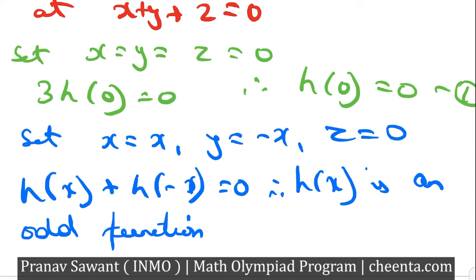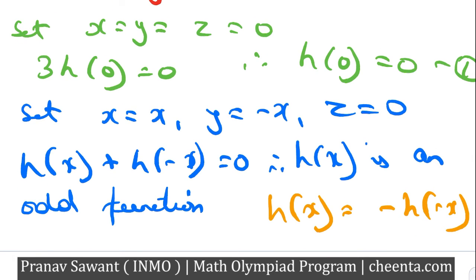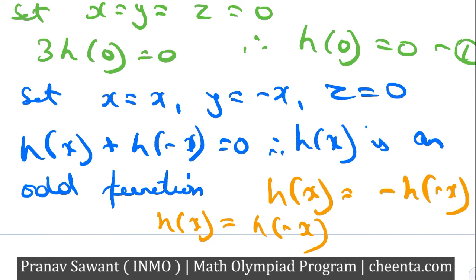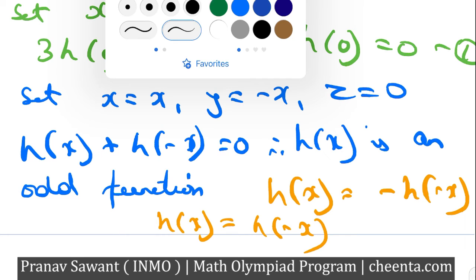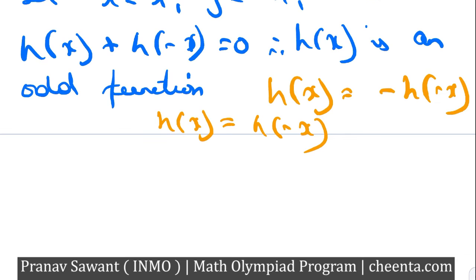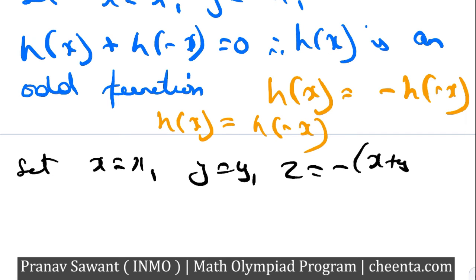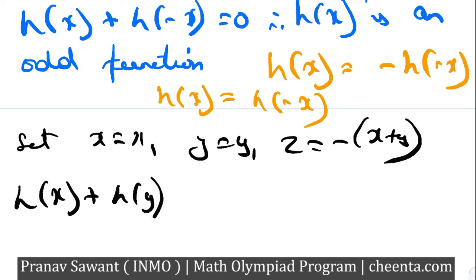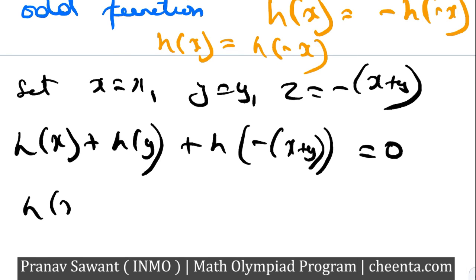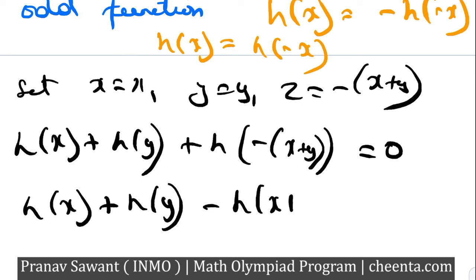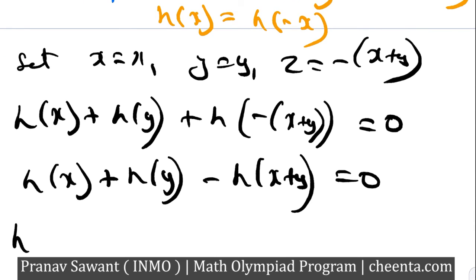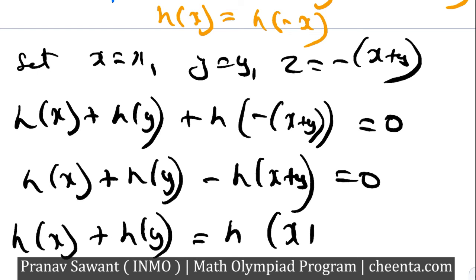An odd function satisfies h(x) = −h(−x), whereas an even function satisfies h(x) = h(−x). Classic examples: sine is an odd function and cosine is an even function. Now setting x = x, y = y, z = −(x+y), we get h(x) + h(y) + h(−(x+y)) = 0. Using the fact that h is odd, h(−(x+y)) = −h(x+y), so we obtain h(x) + h(y) = h(x+y).